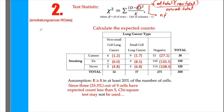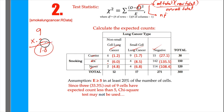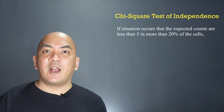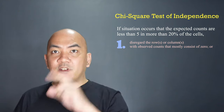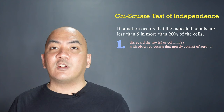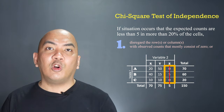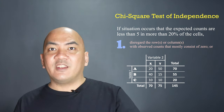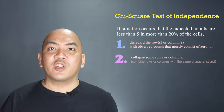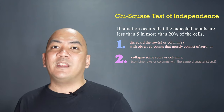Since we have 9 cells, 20% of that is 1.8, meaning no more than 1.8 cells should have expected count less than 5. With 3 such cells, the chi-square test may not be used. When this occurs, you may: first, disregard rows or columns in which observed counts mostly consist of zeros; or second, collapse some rows or columns — meaning combine or merge those with the same characteristics. That will be demonstrated in this example.